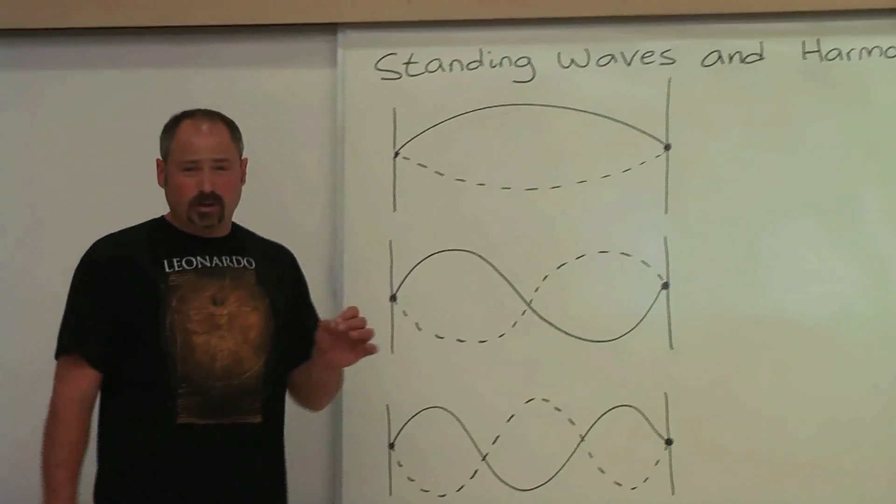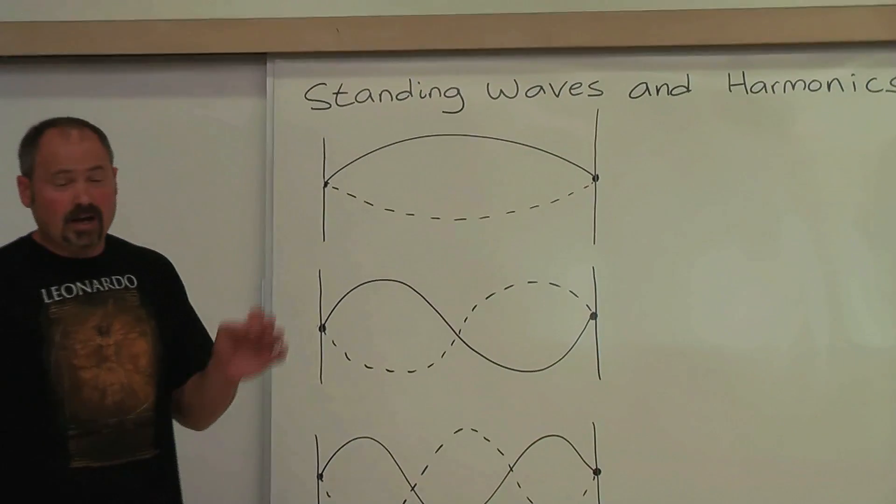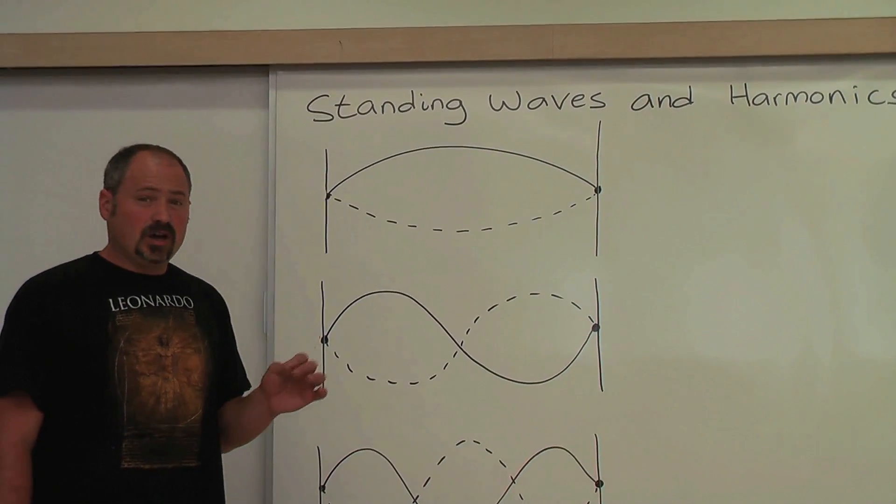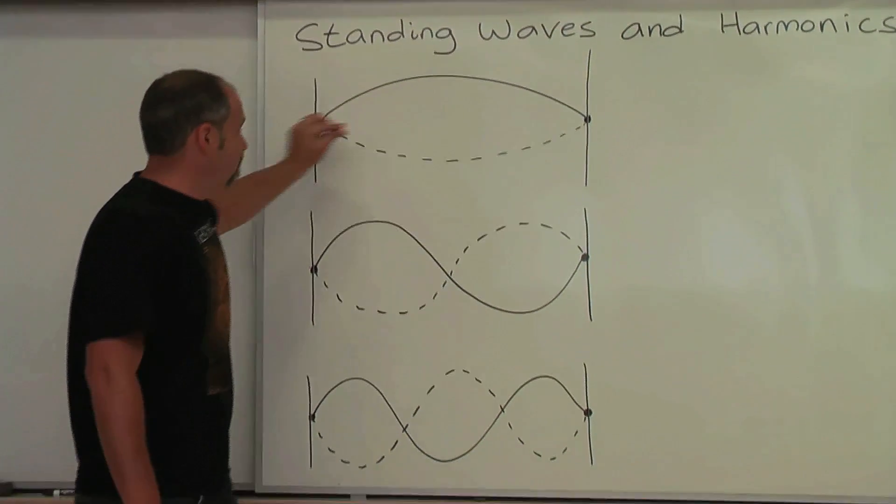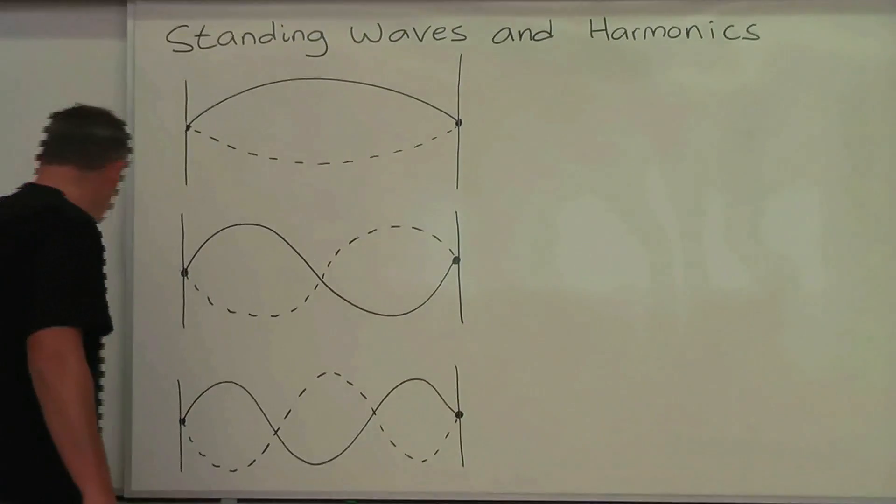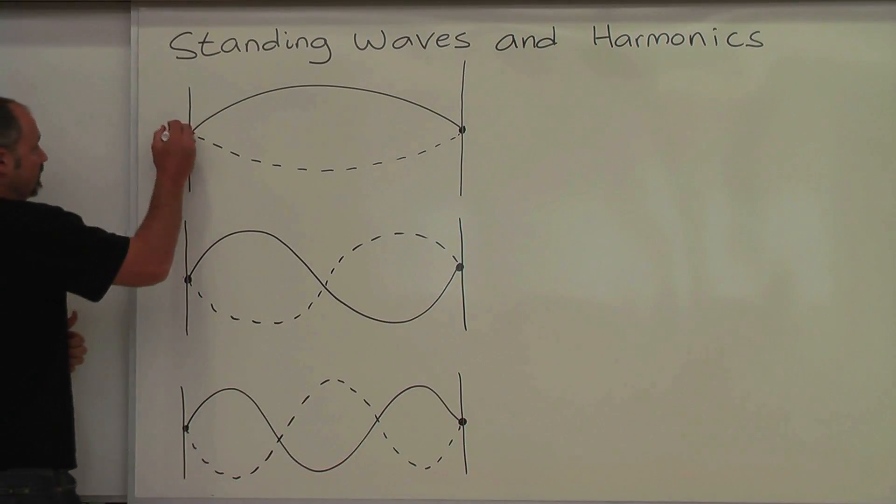Let's derive the formula for the frequency of standing waves with this situation. It's a string that's attached at both ends. Since it's attached at both ends, these are both nodes.